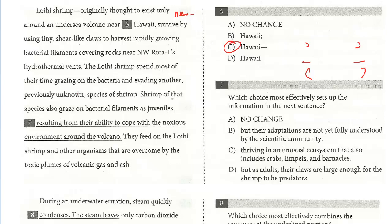The Lohi shrimp spend most of their time grazing on the bacteria and evading another previously unknown species of shrimp. Shrimp of that species also graze on bacterial filaments as juveniles, resulting from their ability to cope with the noxious environment around the volcano. They feed on the Lohi shrimp and other organisms that are overcome by toxic plumes of volcano gas and ash. We want to effectively set up the information in the next sentence — this is an expression of idea, a content-based question. Even though this is about the Lohi shrimp, they're grazing but they're avoiding this other species.